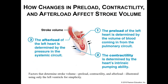This picture shows all three factors that determine stroke volume, specifically discussing the left ventricle, though the same applies to the right ventricle. The more blood we put into the ventricle — the more we stretch it out — that increases stroke volume. The more strongly we contract, the more blood we pump out, increasing stroke volume. And with afterload, as long as we can overcome the pressure in the aorta, we can send that blood out to the body.